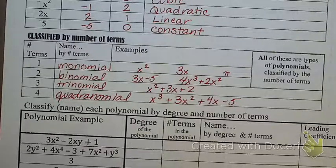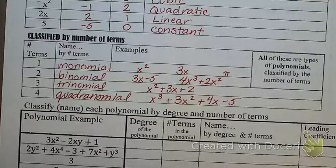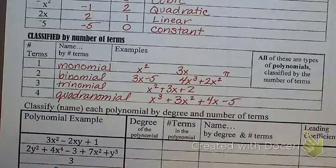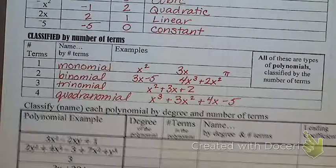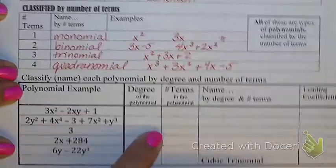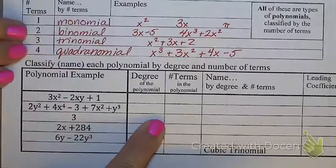And, again, monomial, binomial, trinomial, those are the most common ones after that. They'll just call it a polynomial, usually. So, this part right here is just like what you're going to be doing on your homework, which is on the back side. It is like a mini version of the chart you're going to see back here.